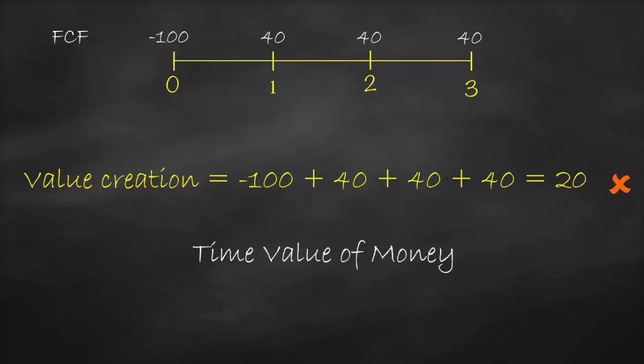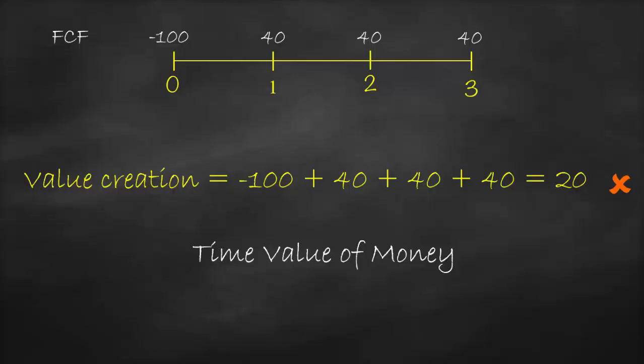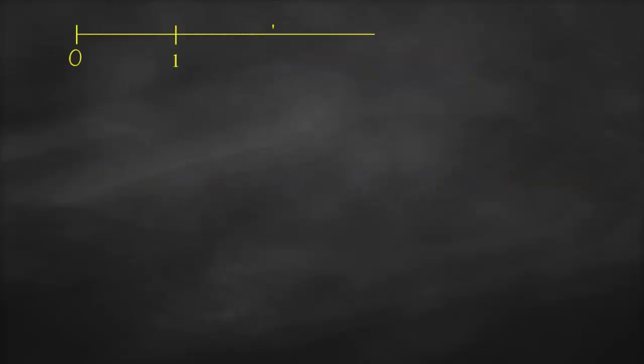What do we mean by time value of money? A dollar today has a different value than a dollar after one year. A dollar today has a bigger value than a dollar after one year because of inflation and risk premium. Because of time value of money, we cannot simply sum the cash flows — we need to get the present value of all future cash flows.